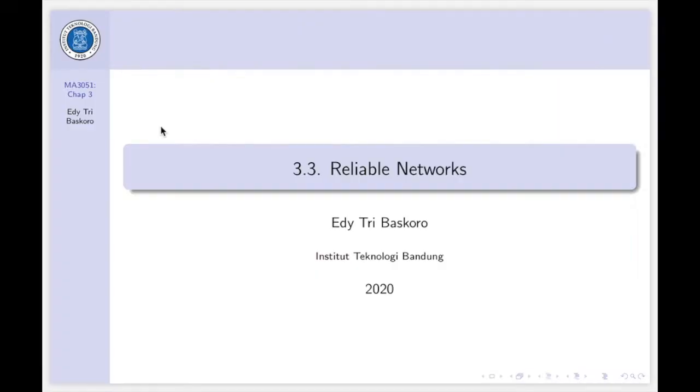For the applications, at chapter 1, we talked about the shortest path problem. And in chapter 2, we discussed the connector problem. And now, at the end of chapter 3, we will talk about reliable networks.